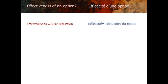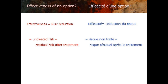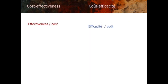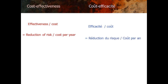What is the effectiveness of an option? For our purposes, it's the risk reduction — how much is the risk reduced. That's the untreated risk subtract the residual risk after treatment, so it's the difference in risk. It's important to understand with risk assessment you might make it very small, but you are reducing risk — you're not making it all go away. Cost-effectiveness, on the other hand, is the traditional business definition: effectiveness divided by cost. Since effectiveness is how much we reduce the risk, it is the reduction of risk divided by the cost per year to do that.